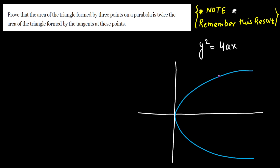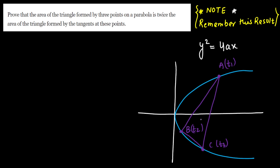Let us take any three points on the parabola. Point A is (at₁², 2at₁), point B is (at₂², 2at₂), and point C is (at₃², 2at₃). If we join these three points we get a triangle ABC. They are also talking about another triangle formed by drawing tangents at these three points — the tangents will intersect at three points giving us one more triangle outside.